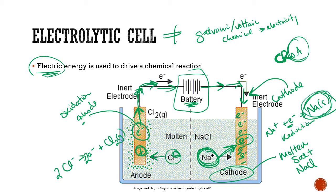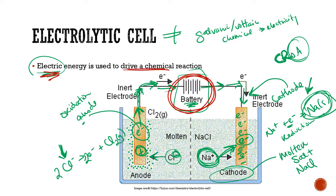We made solid sodium metal on one side and chlorine gas on the other. It should feel weird — a halogen giving electrons to a metal is counterintuitive. But it happens only because the battery makes it happen. Without the battery, none of this would occur. We're using that electrical energy from the battery to force this non-spontaneous chemical reaction to happen — definitely the reverse of our galvanic/voltaic cells.